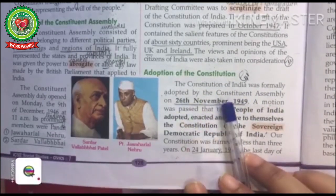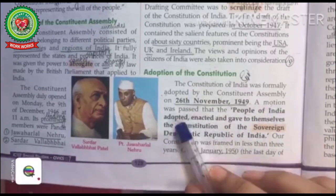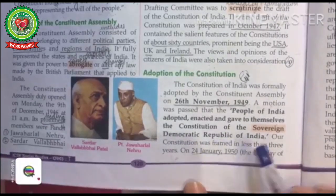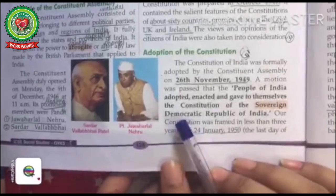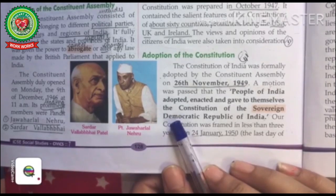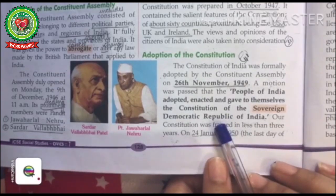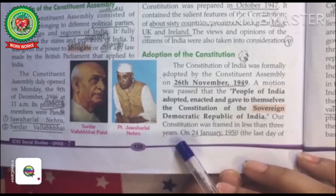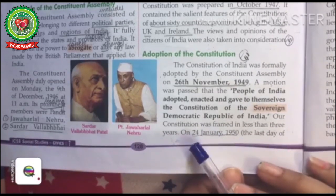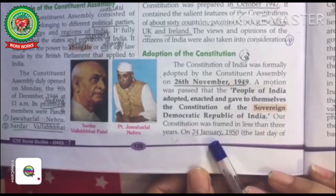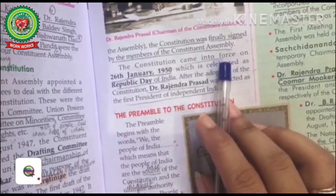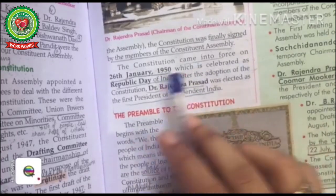The Constitution of India was formally adopted by the Constituent Assembly on 26th November 1949. A motion was passed that the people of India adopted, enacted, and gave to themselves the Constitution of a Sovereign Democratic Republic of India. 'Sovereign' means a country free from external control; 'democratic' means government of the people, by the people, and for the people; 'republic' means no king or queen — the head is elected by the people. The Constitution was framed in two years, eleven months, and eighteen days. It came into force on 26th January 1950, celebrated as Republic Day of India.